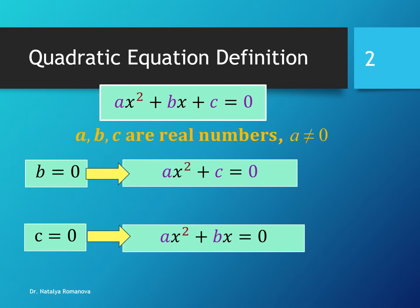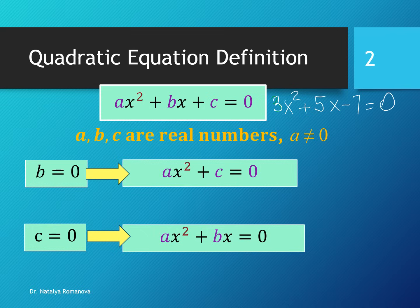The equation ax² + bx + c = 0, with a, b, c real numbers and a ≠ 0, is a quadratic equation. For example, 3x² + 5x - 7 = 0 is a quadratic equation.